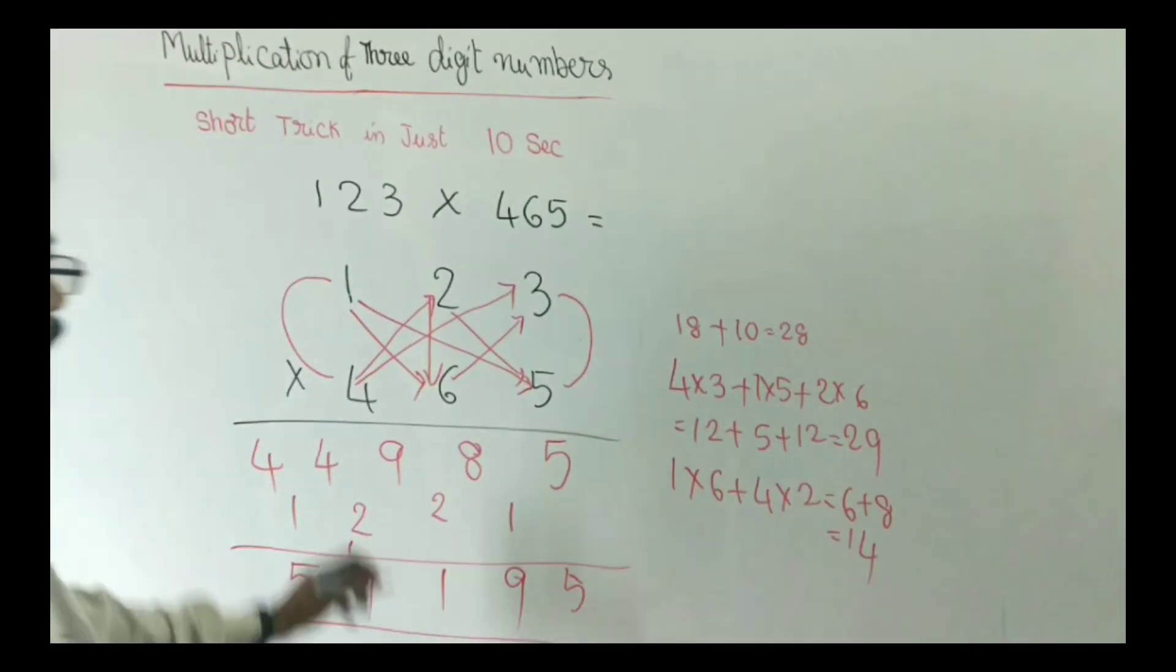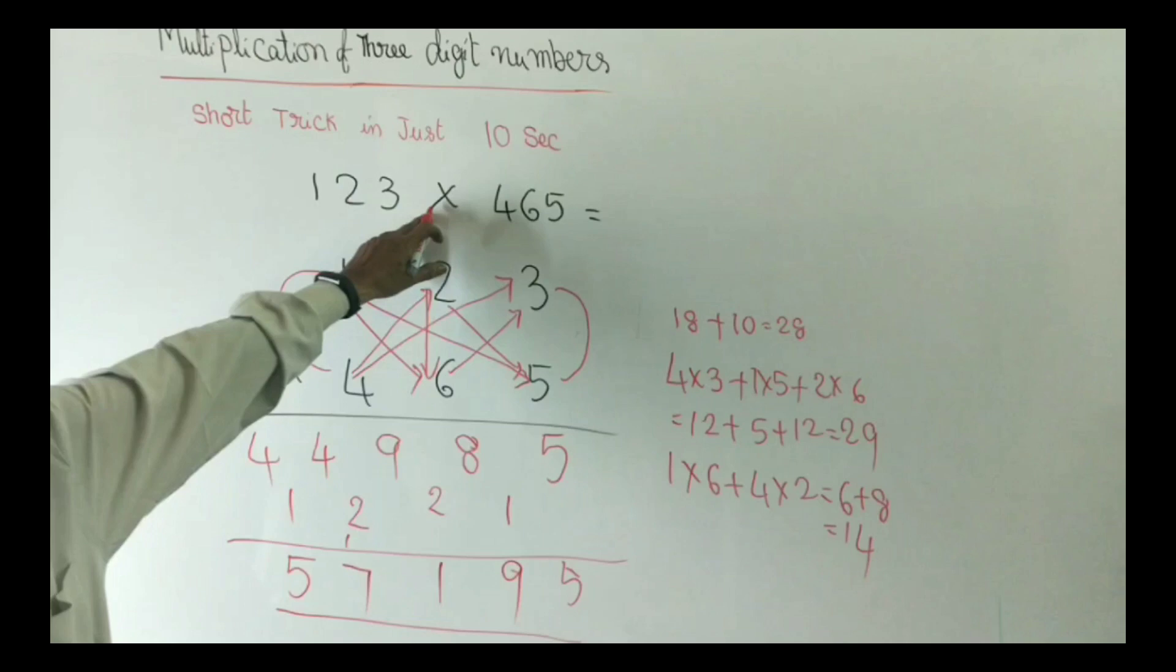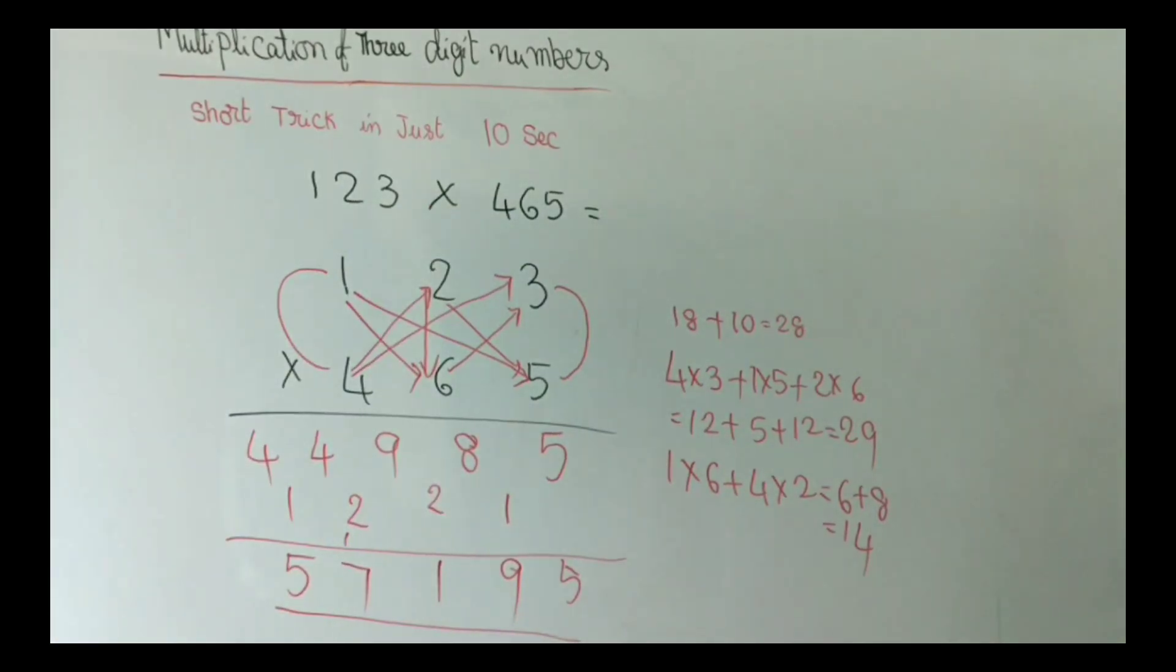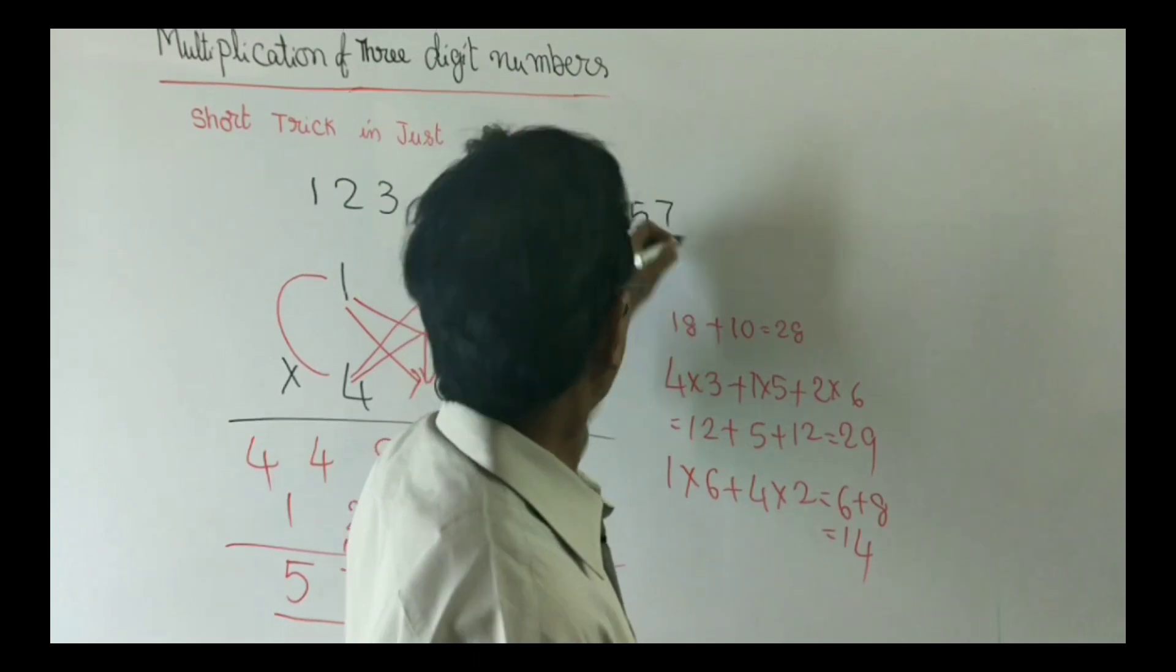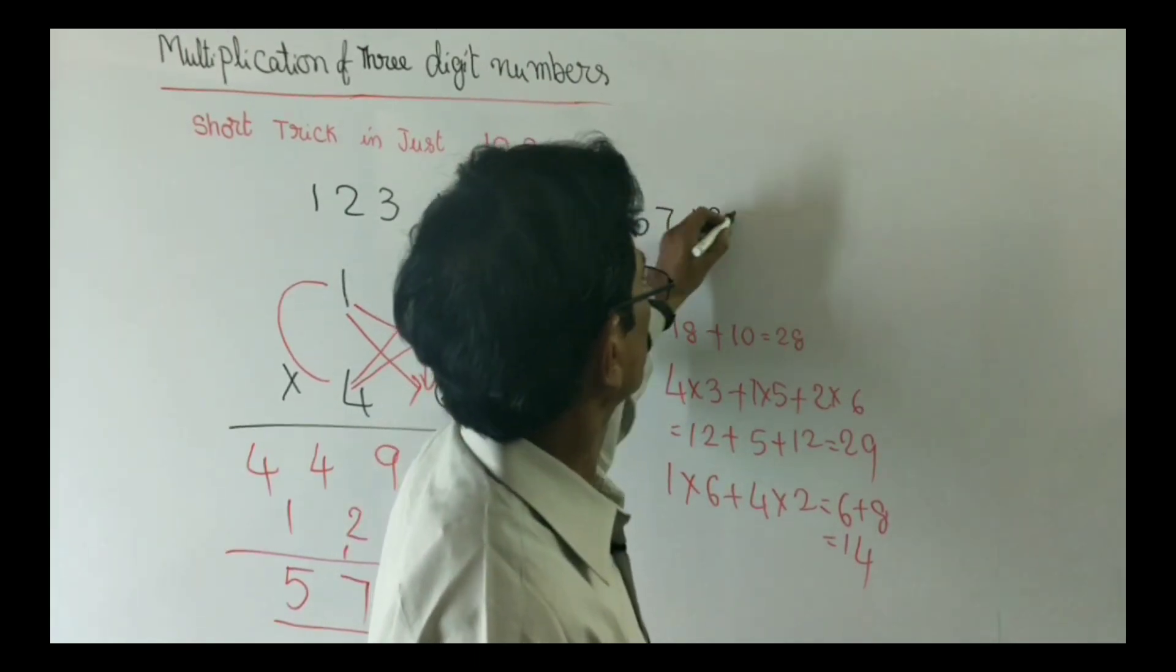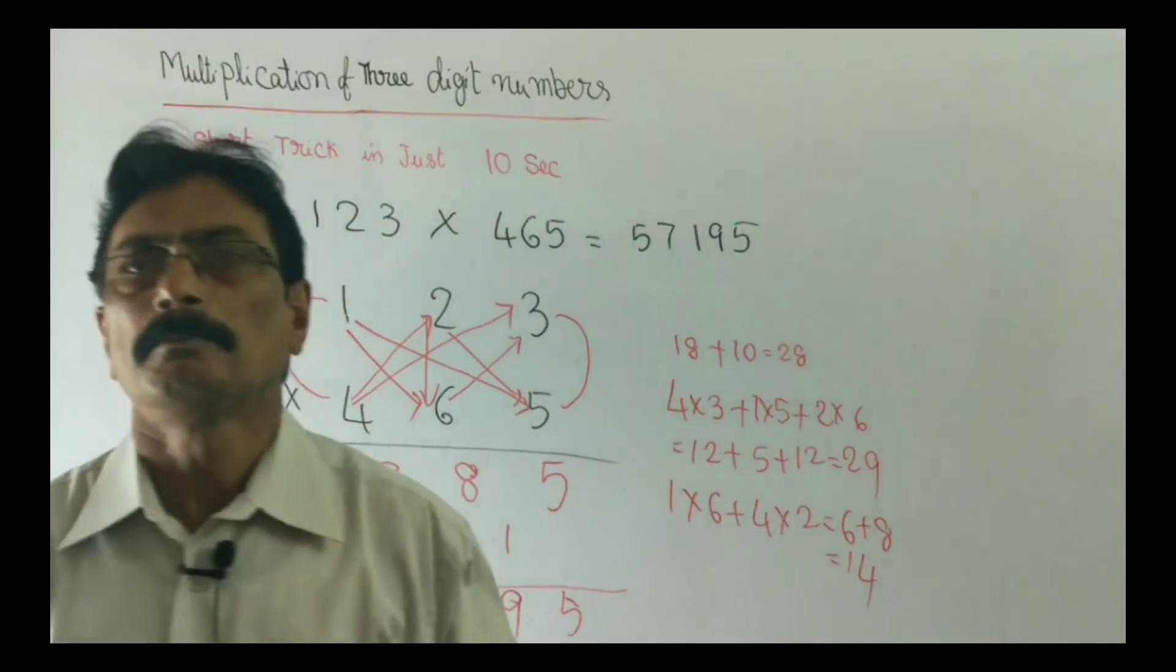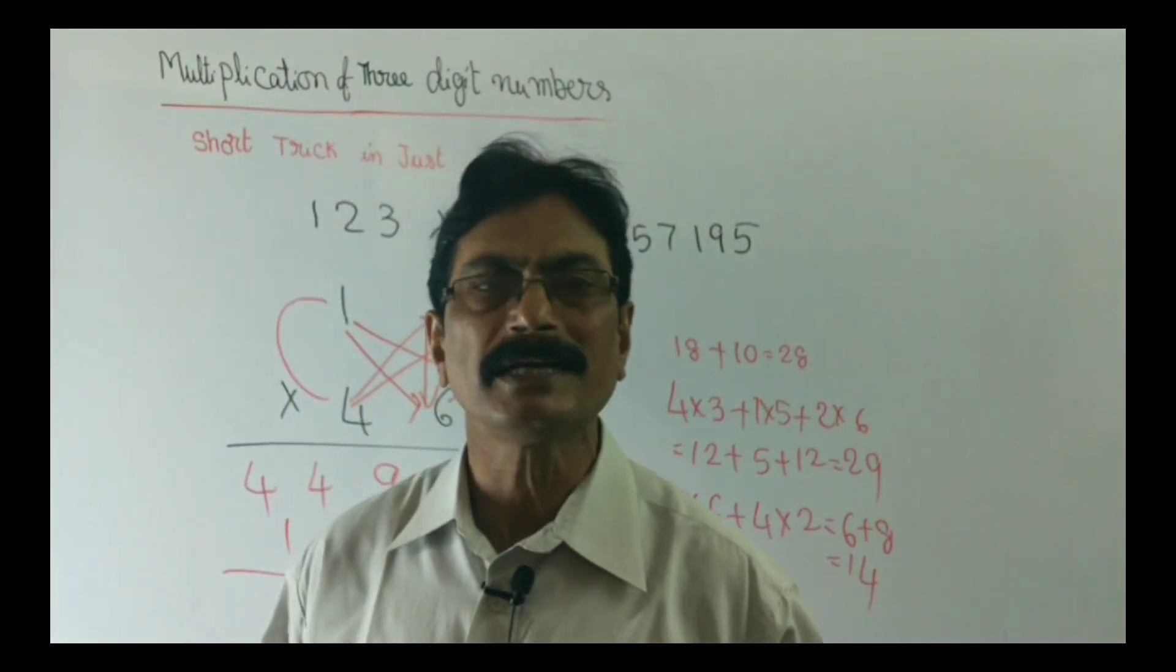So the product of 123 into 465 is equal to 57195. This is the multiplication of 3-digit numbers in shortcut.